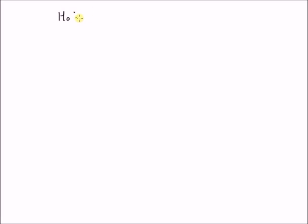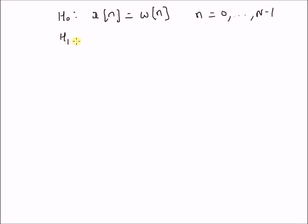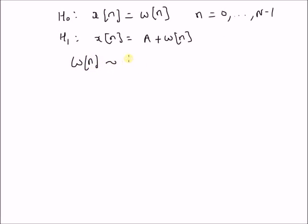That is, given the following models: under H0, the null hypothesis, the observation x(n) is equal to the noise component w(n), where n = 0 up to N-1. That is, we have N observations. Under the alternate hypothesis, the model is x(n) = A + w(n), where A is a DC level, and the noise w(n) follows a normal distribution with mean 0 and variance sigma squared.